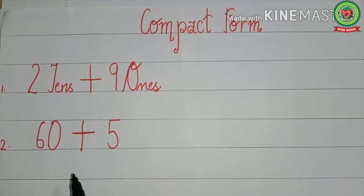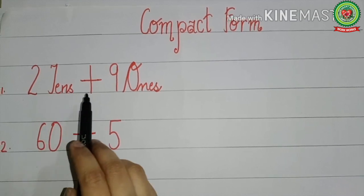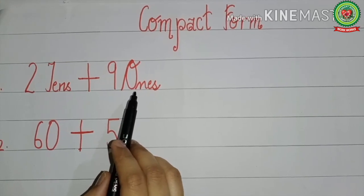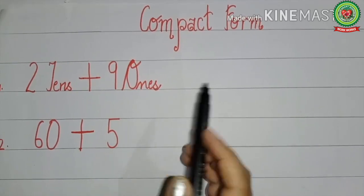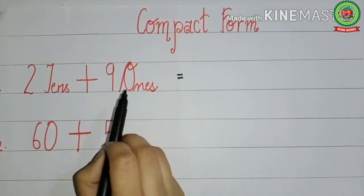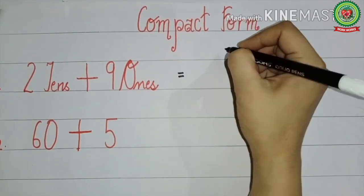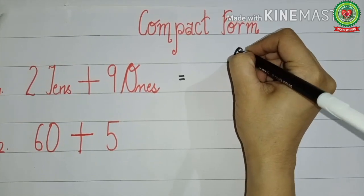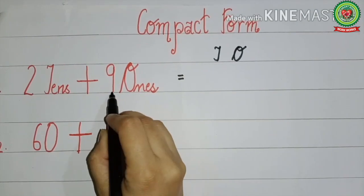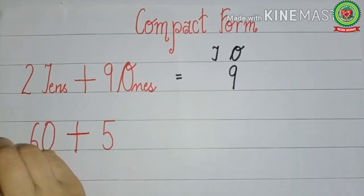Let us take a few examples. Read the statement carefully with me: 2 tens plus 9 ones. This statement is written in expanded form and now we will convert it to compact form. First we write down the place value chart. The place values given are ones and tens, so we write 1s and 10s. What is written under 1s? 9 is written here, so we write 9 under ones.